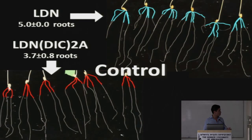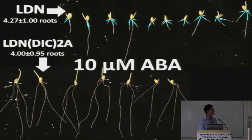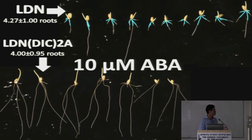When we applied 10 micromolar ABA, there was a high reduction in root size in Langdon, and the number of roots in Langdon was also less. On the other hand, in the substitution line, the number of roots did not appear to be affected, and even the length of the roots was not greatly affected either.